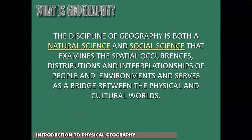What is geography? It is both a natural and social science that examines the spatial occurrences, distributions, and interrelationships between people and the environment they occupy. In this course, we tend to focus on the natural science. If this were a human geography course, we would focus more on the social side. Physical geography affects people, just like people can affect the natural side of the world — there's always some linkage between the two.